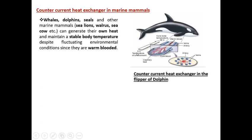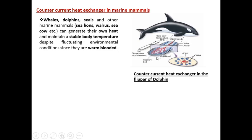The same concept exists with whales, dolphins, seals, and other marine mammals like sea lions, walrus, and sea cow. They can generate their own heat and maintain body temperature because they are warm-blooded. Cold-blooded creatures can adjust their body temperature to the environment, but warm-blooded ones must maintain a specific body temperature — as we all know, humans maintain around 36 to 37 degrees. The same mechanism exists with marine mammals, which are all called warm-blooded creatures.